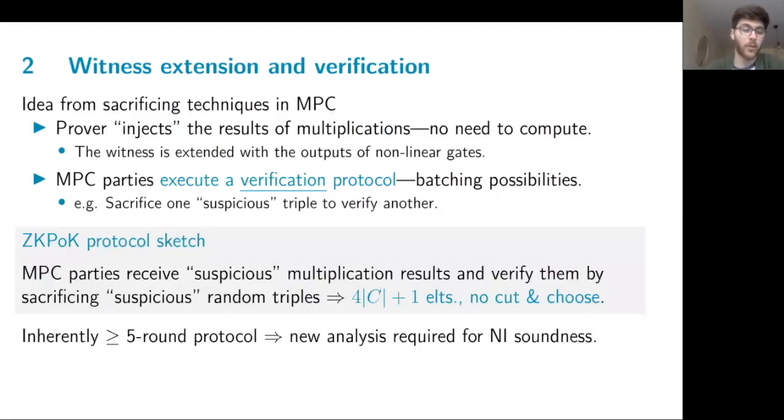So now we can have a quick sketch of a protocol where we see that MPC parties receive suspicious multiplication results from some god-like prover, and then they can verify them by sacrificing equally suspicious random triples. And this would result in a protocol which requires the communication of four elements for each non-linear gate of the circuit, plus one extra. This, however, leads to a protocol which has inherently more than five rounds, which means that the non-interactive soundness cannot be proven straightforwardly.